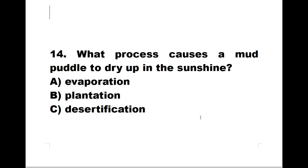Number fourteen: what process causes a mud puddle to dry up in the sunshine? A: evaporation. B: plantation. C: desertification. The correct answer is A, evaporation.